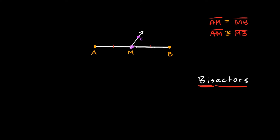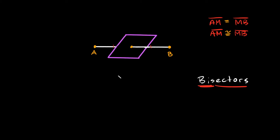Another thing we could draw is a line. We'll label it with a D, so line CD is a segment bisector because it runs straight through the middle of segment AB. We could also use a segment — basically a line without the arrows — and segment CD is likewise a segment bisector because it splits segment AB right through the middle.